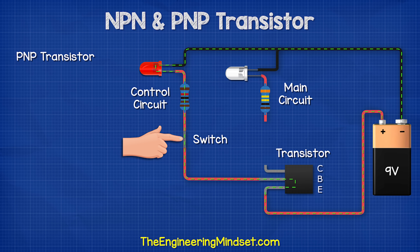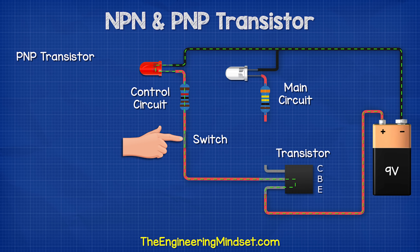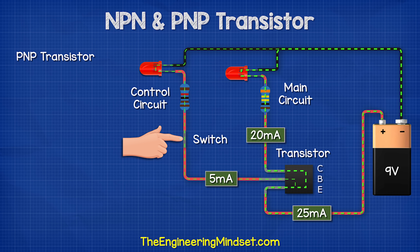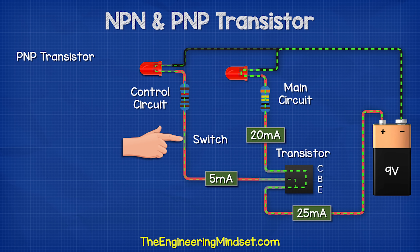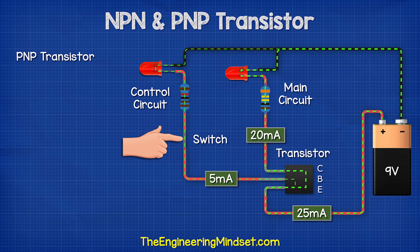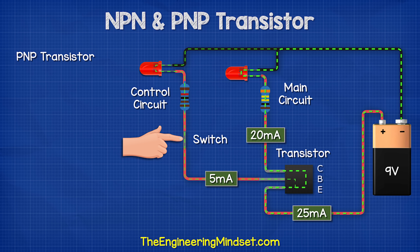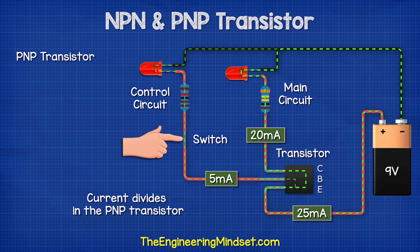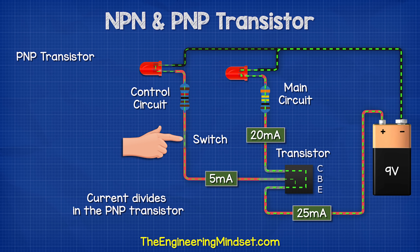If we remove the main circuit, the control circuit LED will still turn on. In this example, when the switch is pressed, there are 25 mA flowing into the emitter, 20 mA flowing out of the collector, and 5 mA flowing out of the base. The current therefore divides in this transistor.